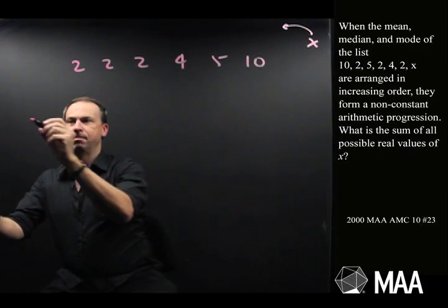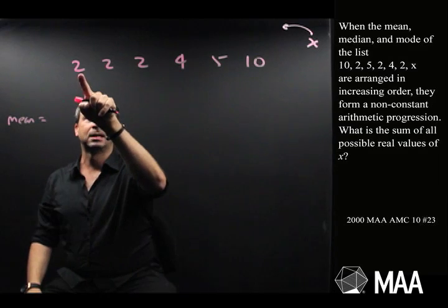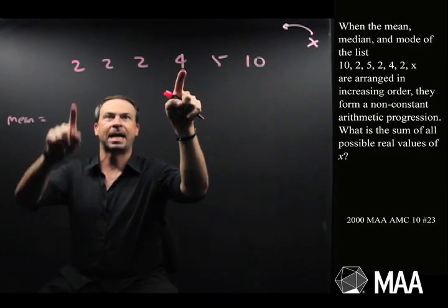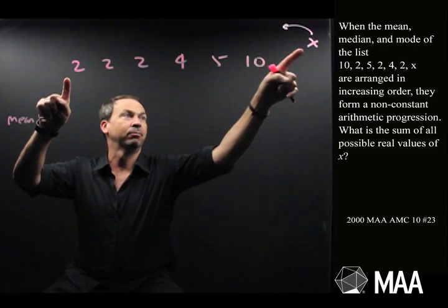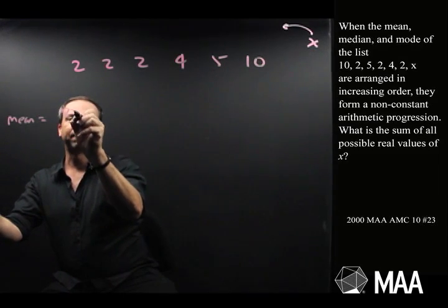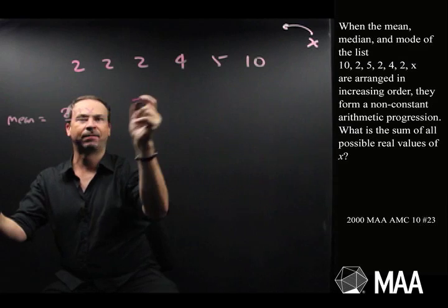The mean. What's the mean? The mean, I said it was the average. So I add up all these numbers. Two plus two plus two. That's four. That's ten, twenty, five plus x. That's one of the numbers. So the mean is twenty-five plus x over seven numbers.